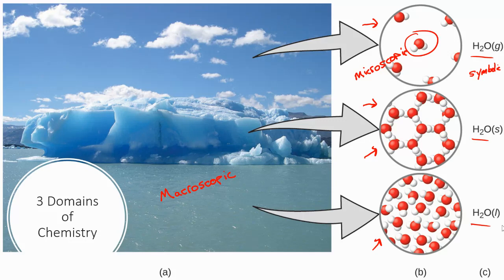You may not be used to seeing those parentheses with a letter in between. Those represent something called phase labels. And it's just speaking to the fact that we have water in the gas phase, water in the solid phase, water in the liquid phase. That symbolic language is like learning a new language, right? If I want to learn French, I've got a lot of vocabulary to learn. And that's true in chemistry as well. And we have to understand.